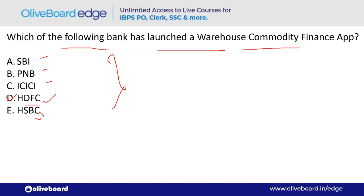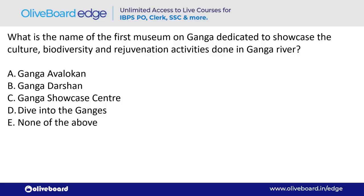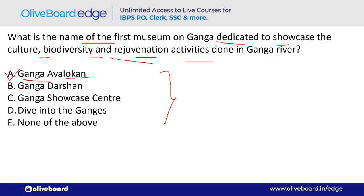What is the name of the first museum on the Ganga, dedicated to showcasing culture, biodiversity, and rejuvenation activities of the Ganga river? The answer is 'Ganga Avlokan' — option A.